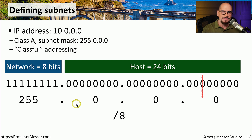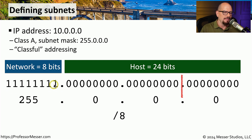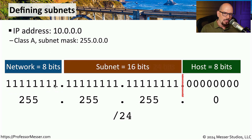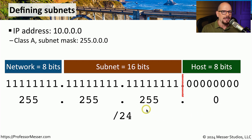In reality, we could pick a different number of subnet bits — we just need to decide what works best for our network. For example, let's draw our line right after the third octet. This means we still have our default first eight bits as part of the class-A address, but we're going to borrow the middle 16 bits as our subnet bits. Those subnet bits would now be turned to one, and the host section of the IP address shrinks down to eight bits, giving a decimal subnet mask of 255.255.255.0 and a CIDR notation of slash 24.